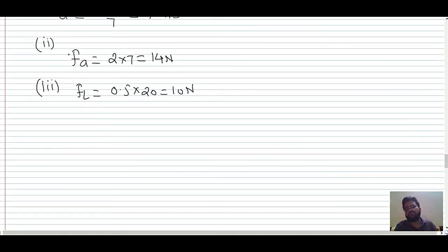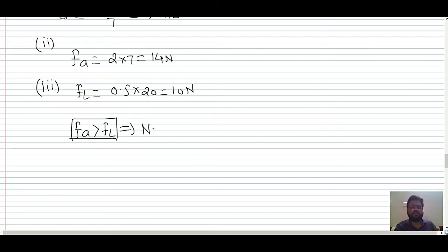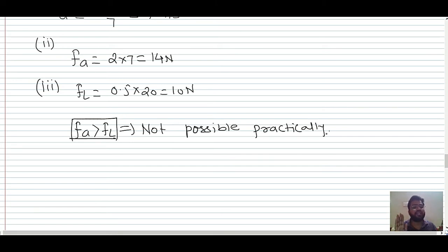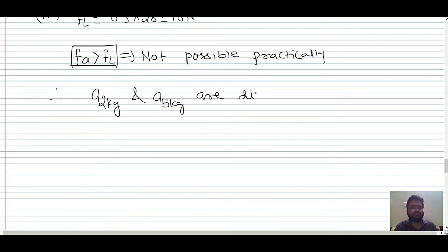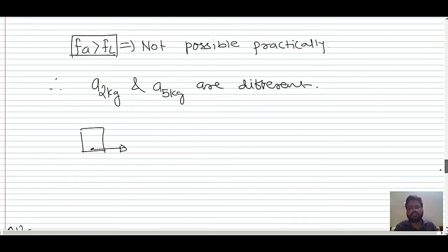Since the calculated friction (14 N) is greater than the limiting value (10 N), it is out of the allowed boundary — not physically possible. Therefore the two blocks must be separated and treated individually. The maximum friction that can act on the 2 kg block is 10 N.